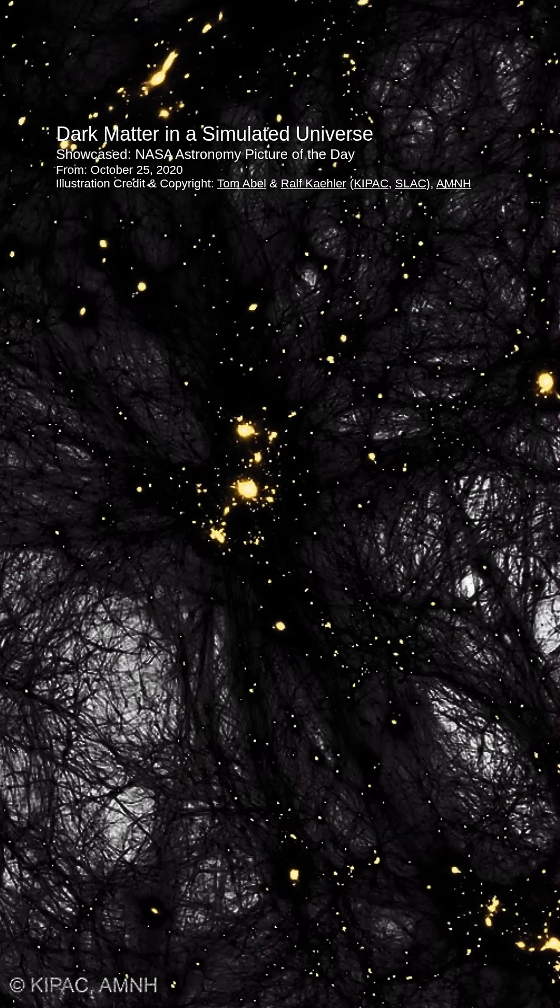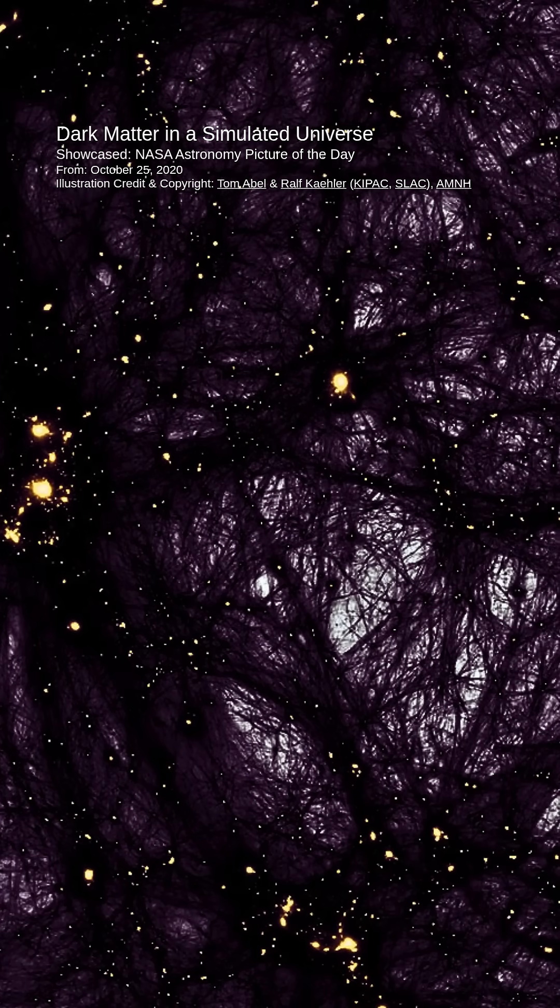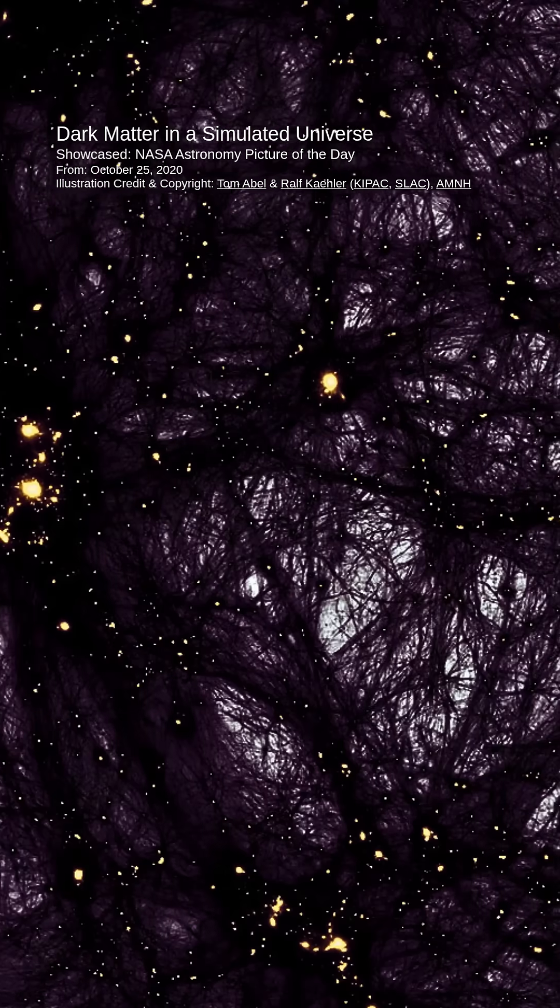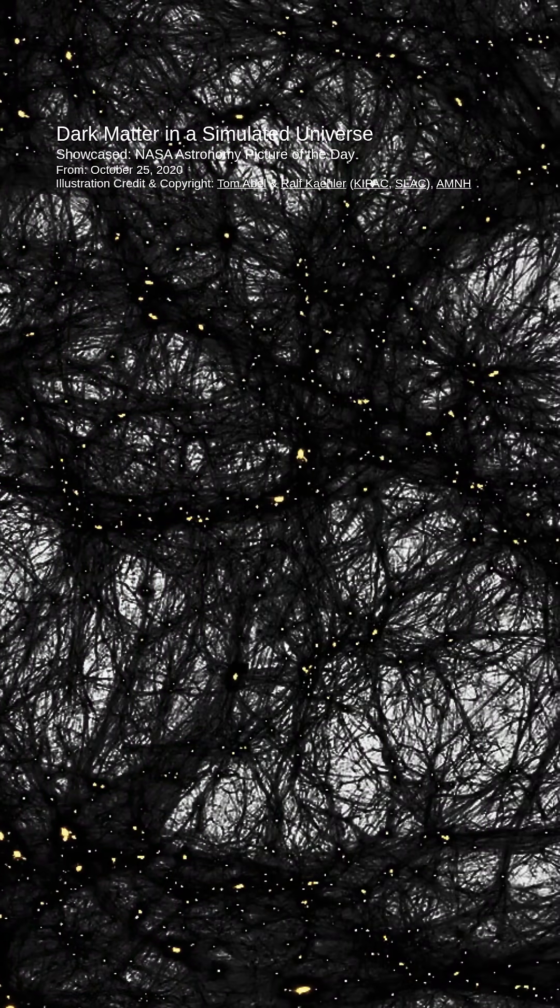why galaxies orbited clusters so fast, why gravitational lenses so strongly deflected light, and why visible matter was distributed as it was both in the local universe and on the cosmic microwave background.